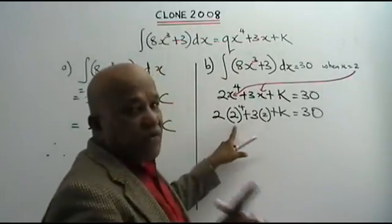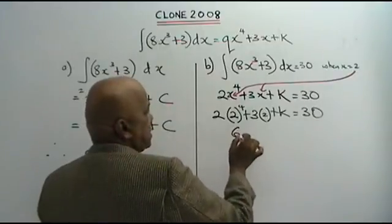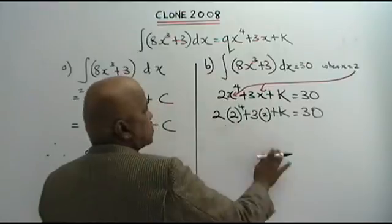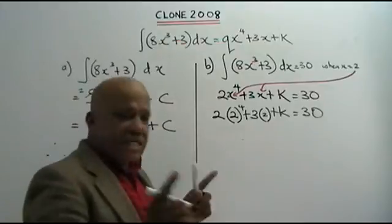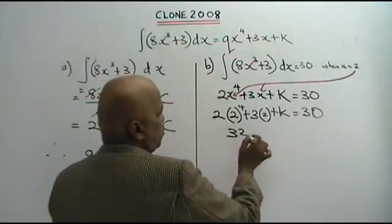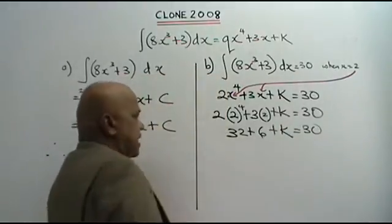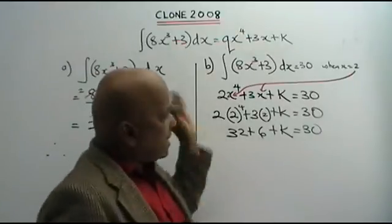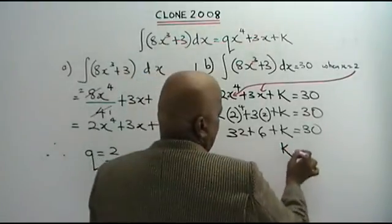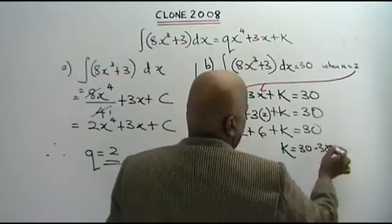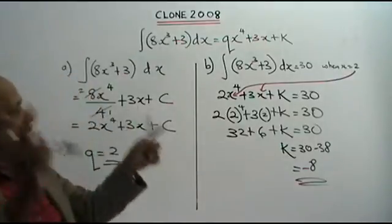2 to the power of 4 is 16. 16 times 2 is 32. So 32 plus 6 equals 38. Bring 38 to the other side as negative 38. Therefore K equals 30 minus 38, which gives negative 8. That is your answer.